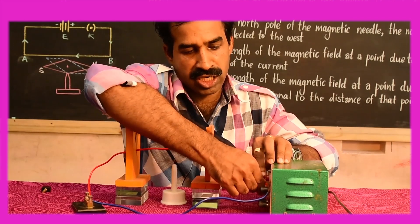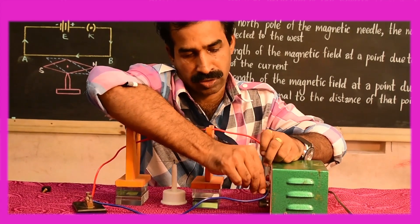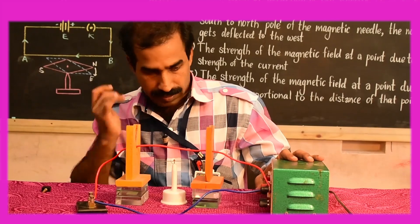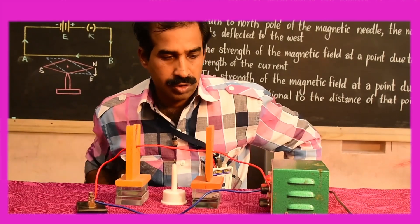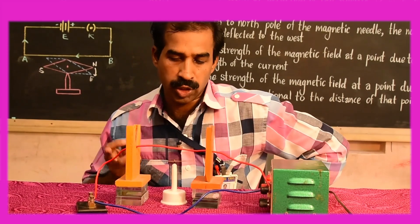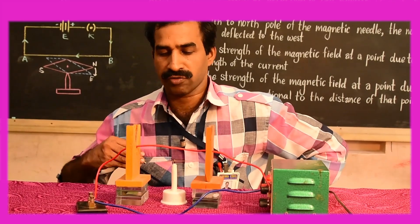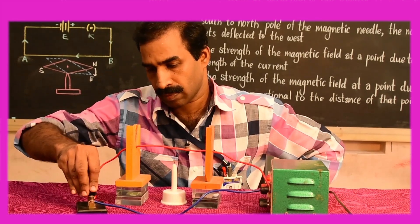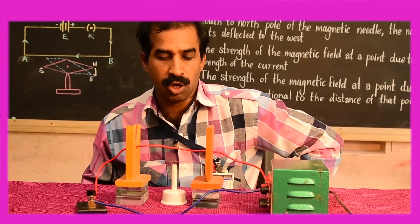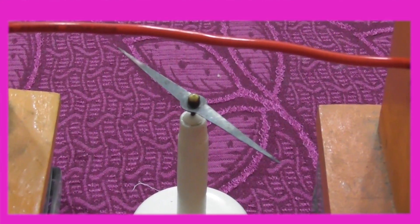I shall interchange the terminals so that the direction of the current is reversed. The terminals are interchanged, so the current flows from the north pole of the magnet to the south pole of the magnet. In this case, the north pole of the magnetic needle gets deflected towards the east. Unplug the key and stop the flow of current so that the magnetic needle returns to its original position.